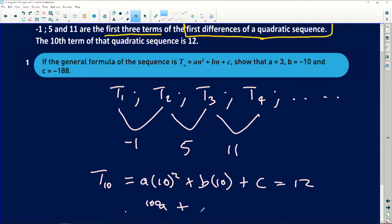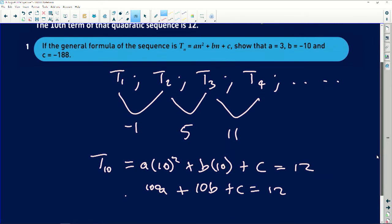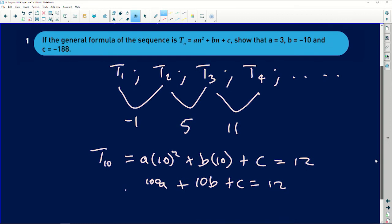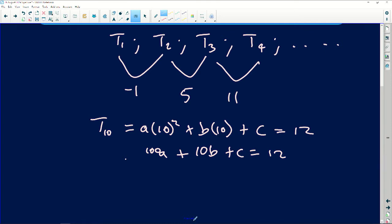Now the question says if the general formula of the sequence is given by that, show that. Now before we can go anywhere, immediately I see the word 'show that', I want you to hide everything that's after the word 'that' and then change the question to be: find the value of a, b, and c. When you find them, they must be the same as what you've hid in terms of what they're saying you must show. So that's one of the things I please need you guys to do. So let's have a look at the question.